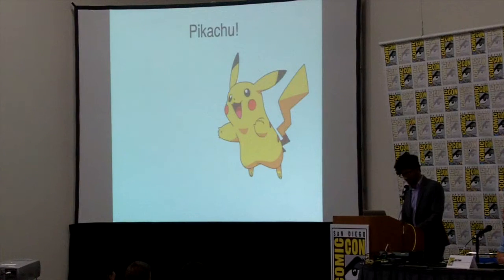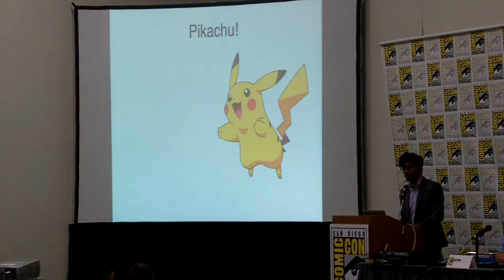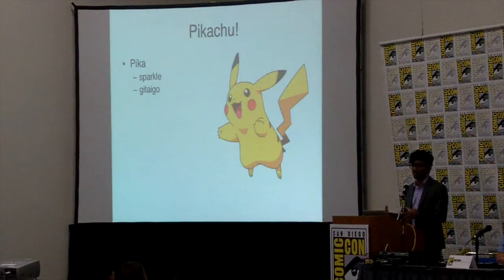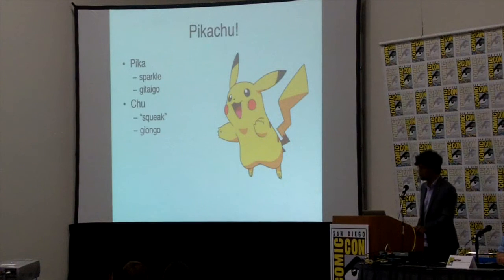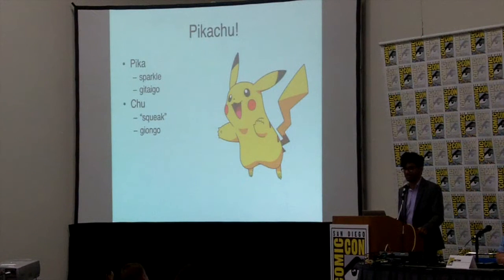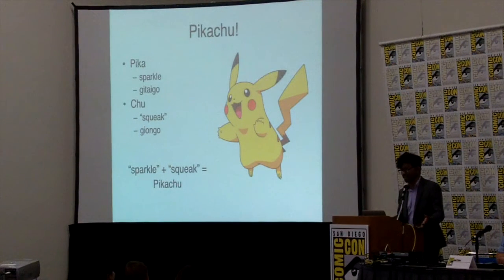Here's an example: Pikachu's name is actually a combination of one gitaigo and one giongo word. The 'pika' part comes from the Japanese word 'pika pika,' which is a gitaigo for the state of sparkling — it literally means sparkly. When things sparkle, they don't really make noise, but Japanese uses a sound effect to communicate this idea. The 'chu' part means 'squeak' — the onomatopoeia for mice in Japanese, like how 'meow' is for cats in English. So sparkle plus squeak gives you Pikachu, a pretty apt name for an electrically charged rodent.